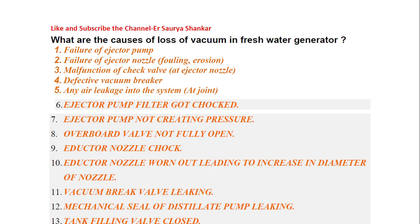What are the causes? There can be many causes. Failure of the ejector pump, failure of ejector nozzle — that can be either fouling or erosion. Because of the turbulence and the pockets that are created, we have erosion or pitting. Malfunction of check valve at the ejector nozzle, defective vacuum breaker, any air leakage into the system at joints, ejector pump filter got choked, ejector pump not creating pressure.